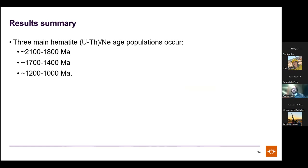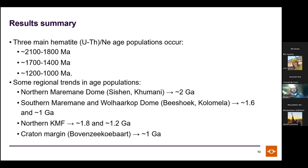Three main hematite age populations emerged. The first, at around 2 billion years, aligns with the pre-Khamakhara unconformity thought to be close to 2 billion years in age based on paleomagnetics and ages from the Ulifansu Group. To the north of the Maramani Dome at Sishin and Pumani, this 2 billion year age is very well represented, whereas to the southern dome and Volarkov Dome, more complicated mid-range to younger ages appear.